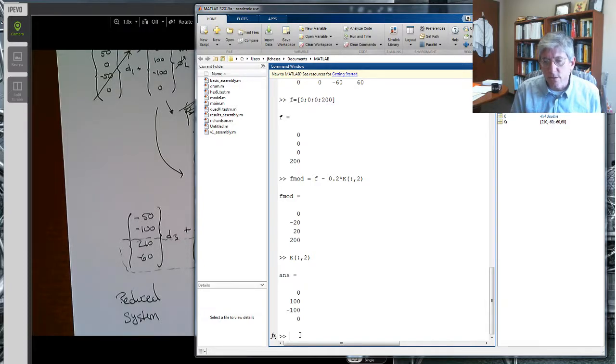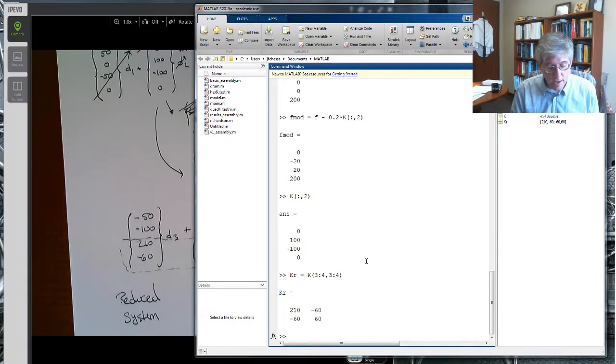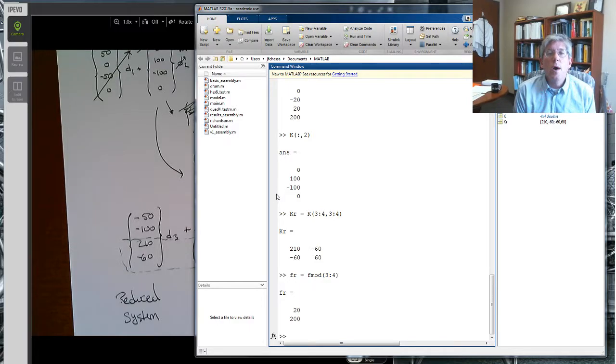And now what I want to do is I want to solve the reduced system, so KR. Again, I'll use this notation to make my life a little simpler so I don't have to rewrite everything. It's going to be K, rows three and four, columns three and four. So there it is, it's the same as before, and my F reduced is going to be the second two rows of my modified F vector. Now you know, if you want to retype everything, that's fine too. I don't really care at this point in time, but when we get to more complicated things, if you get used to this, it'll make your life a lot easier.